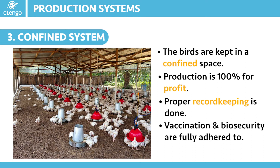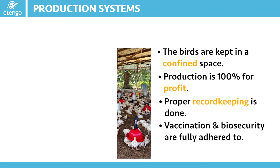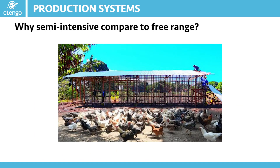In this system, serious farming is what it's all about — we are making money, so we are not taking chances on anything. The birds are confined and do not get out of the poultry house; they are always 100 percent within the chicken coop at all times. Let us now get to look at why we would advocate for a semi-intensive production system when a farmer wants to get into indigenous poultry farming.